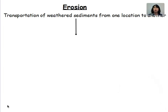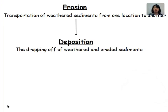We've been talking about erosion extensively in class. If you recall, erosion is the transportation of weathered sediments from one location to another. So after we've broken down those sediments, we need to take them from point A and move them down to point B. After we've moved those sediments, we're going to have deposition take place — that is the depositing or dropping off of those weathered and eroded sediments.